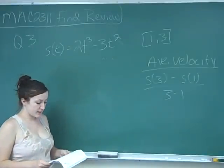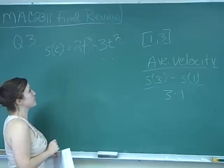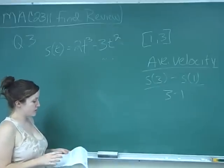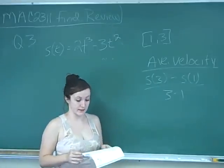So this is question number 3 and it says an object is moving according to the position function s(t) equals 2t cubed minus 3t squared with s in feet and t in seconds.